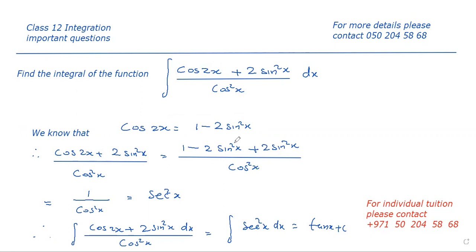This minus 2 sin square x and positive 2 sin square x become cancelled. Then the function is reduced to 1 by cos square x which is equal to sec square x.